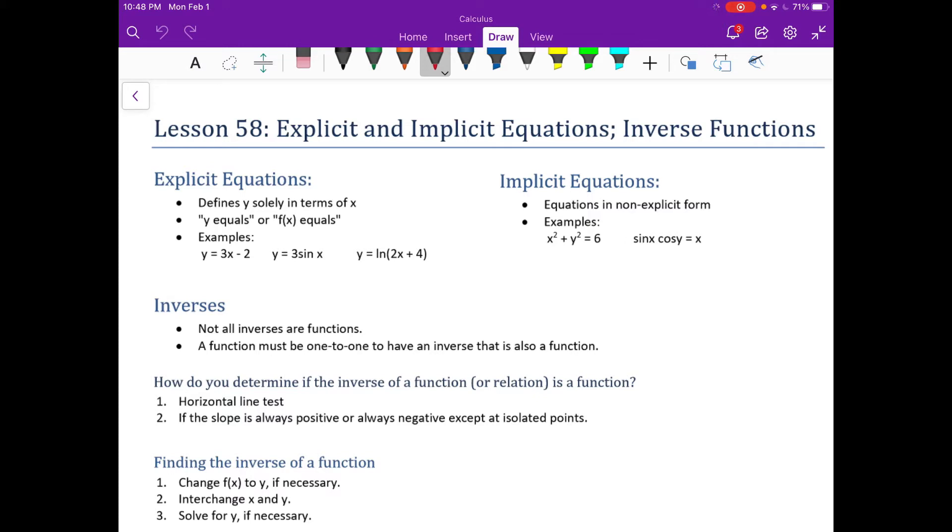Secondly, it would have to pass the horizontal line test, which is similar to the vertical line test. It's just that a horizontal line can only pass through one point at a time. Can't have a horizontal line that passes through more than one point.